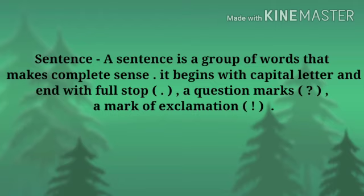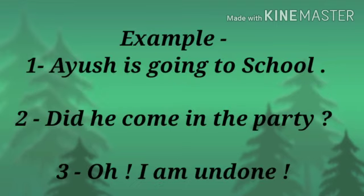Let's see in the example. Ayus is going to school. Did he come in the party? Oh, I am undone. We can see that this group of words is complete in itself and it is giving complete meaning. It is ending with full stop, so it is a sentence.